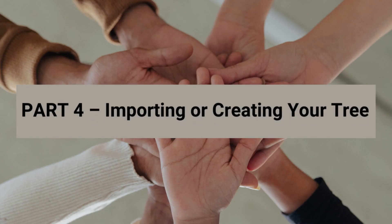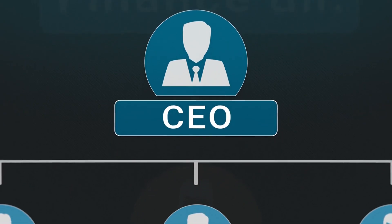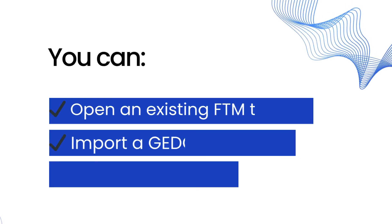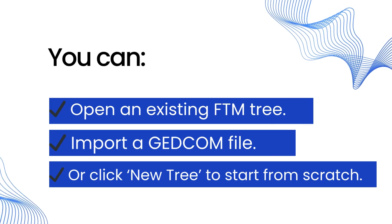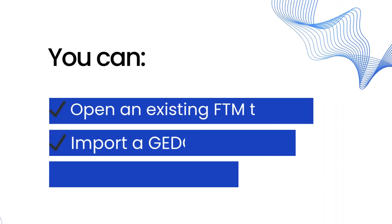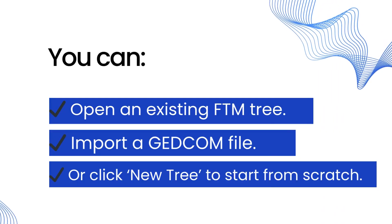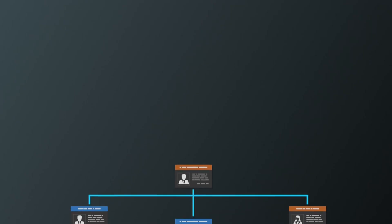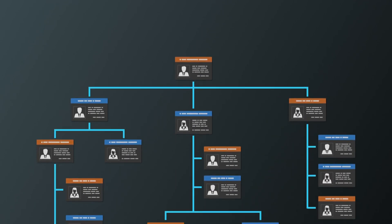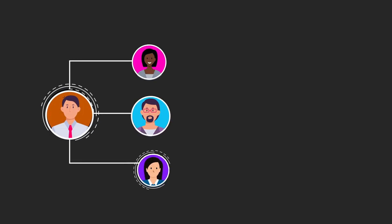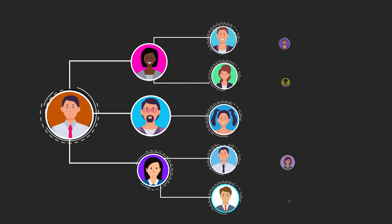Now you're in the Family Tree Maker workspace, and you've got a few options. You can open an existing FTM tree, import a GEDCOM file, or click New Tree to start from scratch. If you're brand new, starting fresh is easy — just enter your starting person's details, usually yourself, and begin adding relatives.